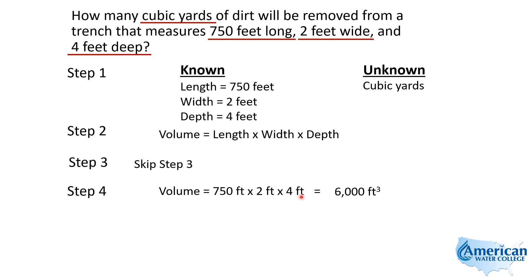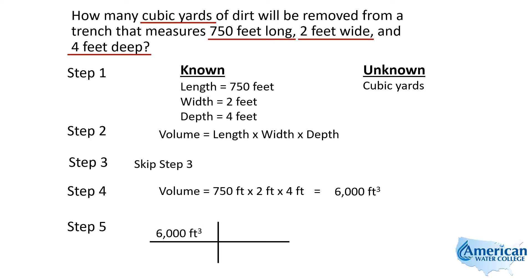A foot times a foot times a foot gives us cubic feet, but notice we don't want cubic feet — we want cubic yards. So we're going to do step five and convert our cubic feet to cubic yards. In those flashcards there's an equivalent that says one cubic yard is equivalent to 27 cubic feet — you'll want to remember that. Doing our unit conversion, we load in our 6,000 cubic feet, then load in the equivalent of 27 cubic feet per one cubic yard. That allows the cubic feet to divide out, leaving us with cubic yards. So we take 6,000 and divide it by 27, giving us 222 cubic yards.